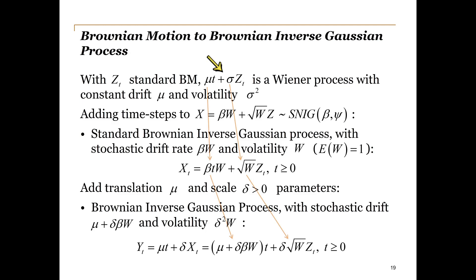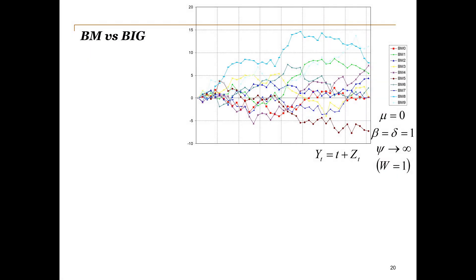When we add constant drift and constant volatility to a standard Brownian motion, we get the well-known Wiener process. However, when we add time steps to our standard normal inverse Gaussian process, we get a process with stochastic drift and stochastic volatility, as introduced by the UIG distributed W. Adding translation and scale parameters to generalize leads us to the Brownian inverse Gaussian process, which is the basis of our new model. This slide shows the difference between standard Brownian motion and the Brownian inverse Gaussian process without scale or translation effects.